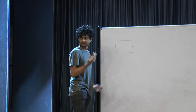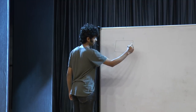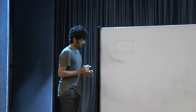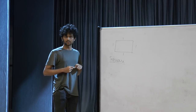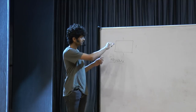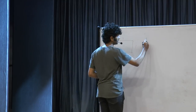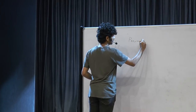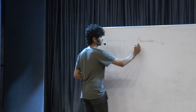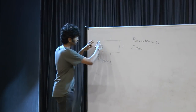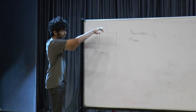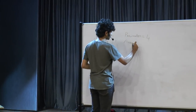Let's take a square of side length one. You know what the perimeter is, right? The perimeter is just the sum of lengths of the sides, so in this case the perimeter is four. What is the area of the square? It is side length squared — side length multiplied with itself — so the area is also one.